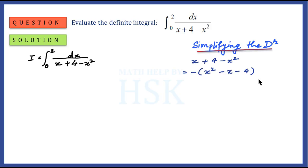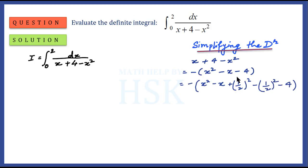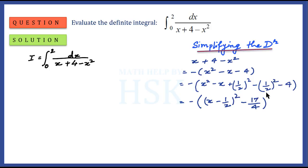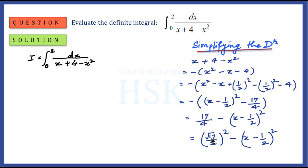Simplifying the denominator: first, a minus sign is taken as common. Since the coefficient of x² is 1, I take half the coefficient of x — which is 1 — so I add and subtract (1/2)² to the expression. This gives x minus 1/2 whole square, and the remaining terms combine to give minus 17/4. Multiplying through by the minus sign gives 17/4 minus (x - 1/2)², which can be written as √(17)/2 whole square minus (x - 1/2) whole square.